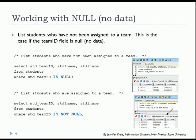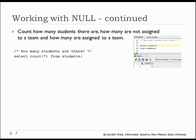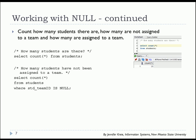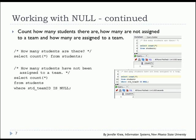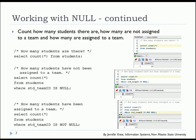If you think back to previous videos, we know that we have 15 students. In the next slide, we'll step through and double-check all of this by using a COUNT. SELECT COUNT(*) FROM STUDENTS gives us a total of 15. SELECT COUNT(*) FROM STUDENTS WHERE student team ID IS NULL gives us two. And SELECT COUNT(*) FROM STUDENTS WHERE student team ID IS NOT NULL gives us our count of 13.